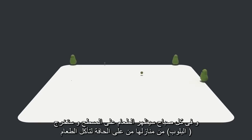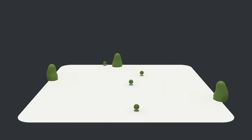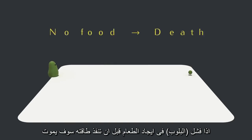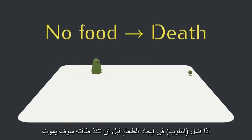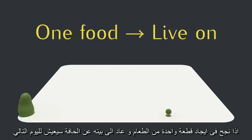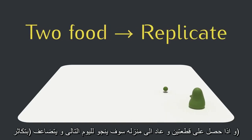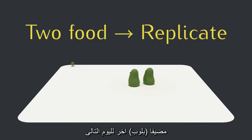So what does our environment look like? Creatures will live on this plane, and each morning, food appears on the plane, and the blobs emerge from their homes around the edge to go out and eat the food. Here are the rules: if a blob fails to find any food before running out of energy, it will die. If a blob gets one piece of food and manages to get back home to the edge, it will live on to the next day. And if a blob gets two pieces and gets home, it will survive to the next day and also replicate, adding another creature to the next day.